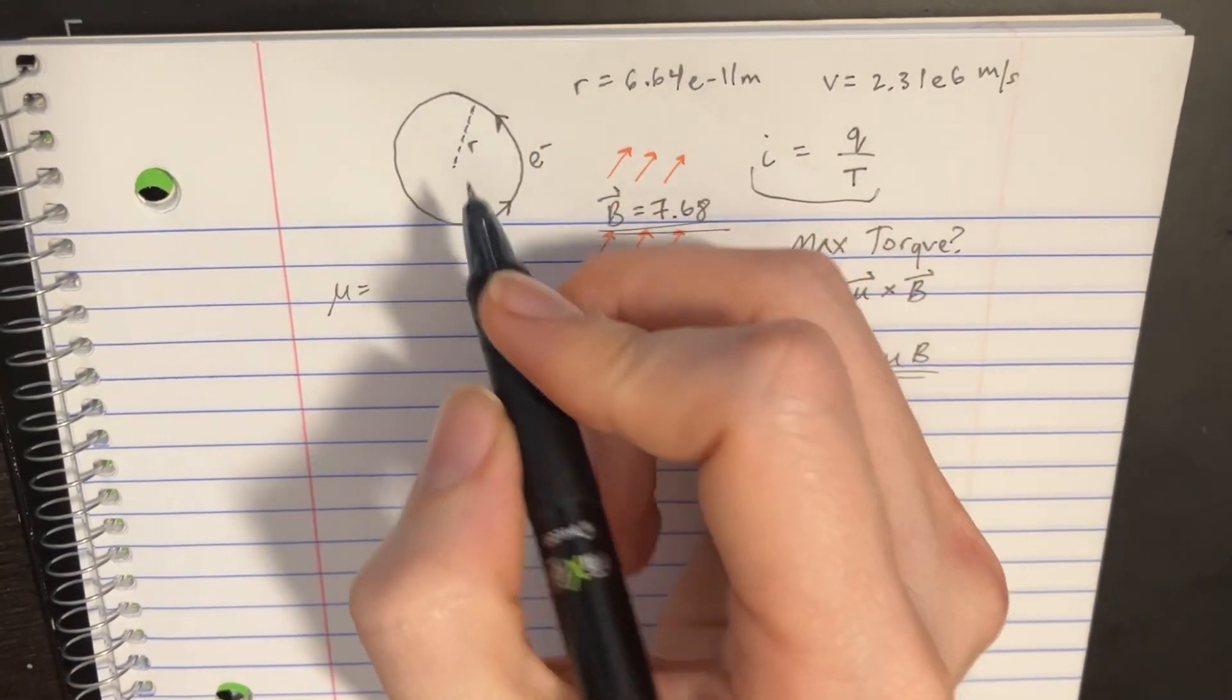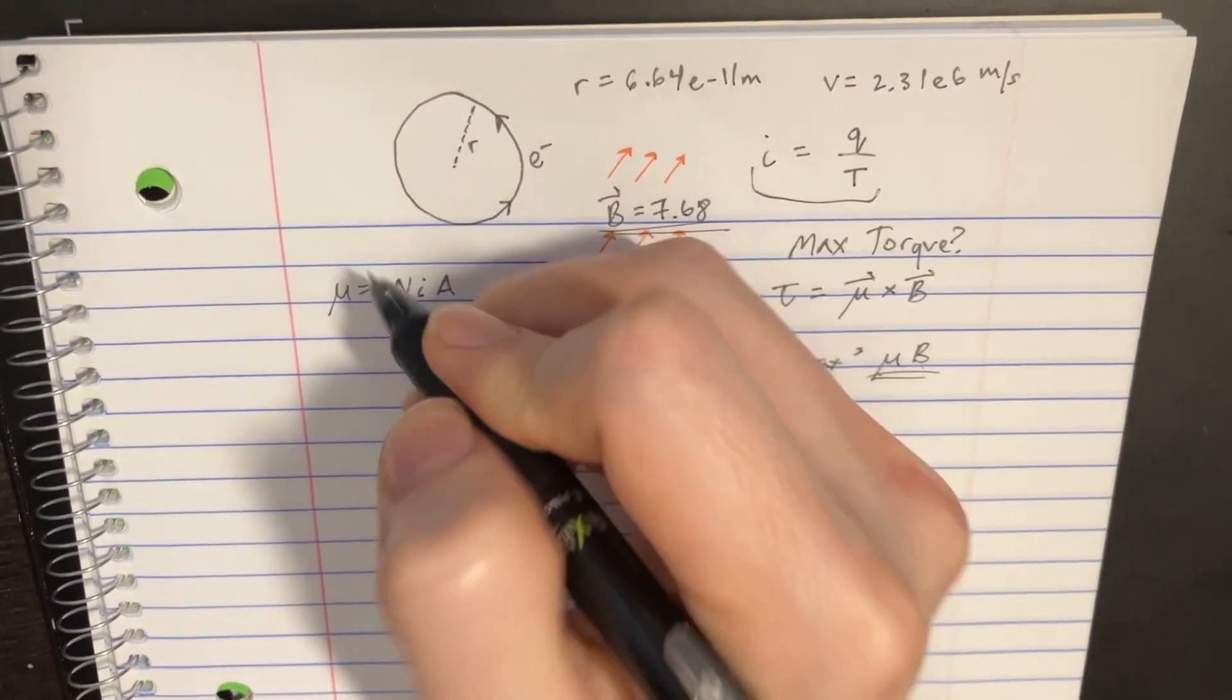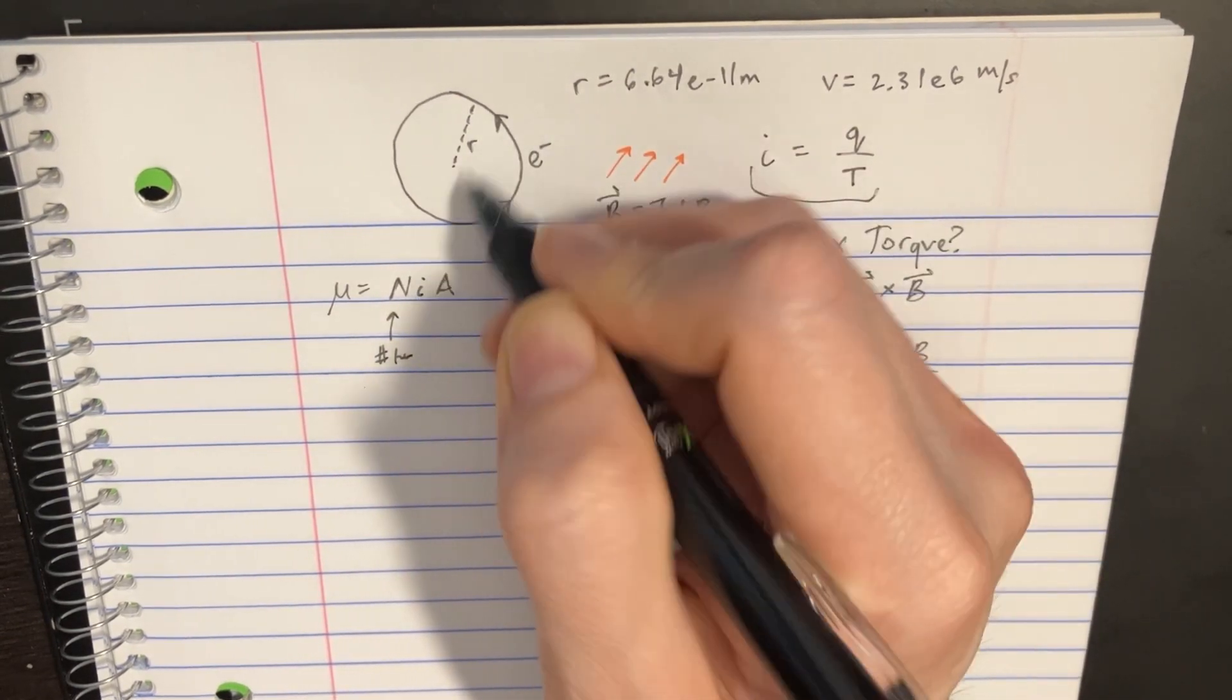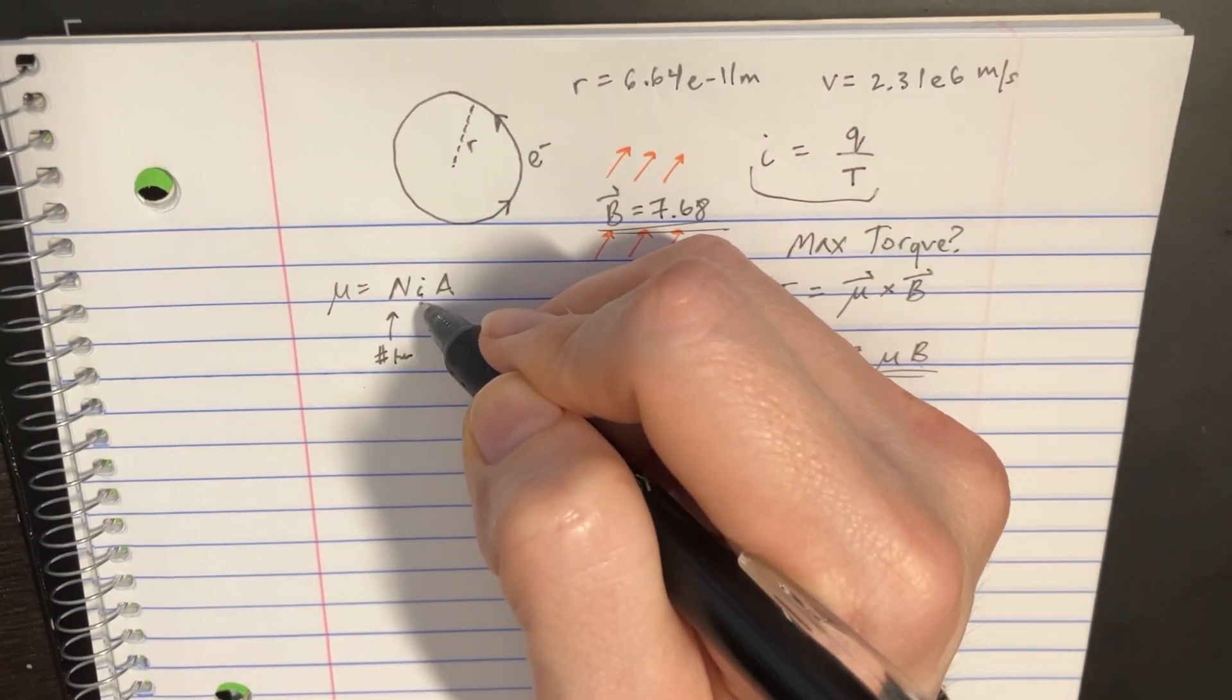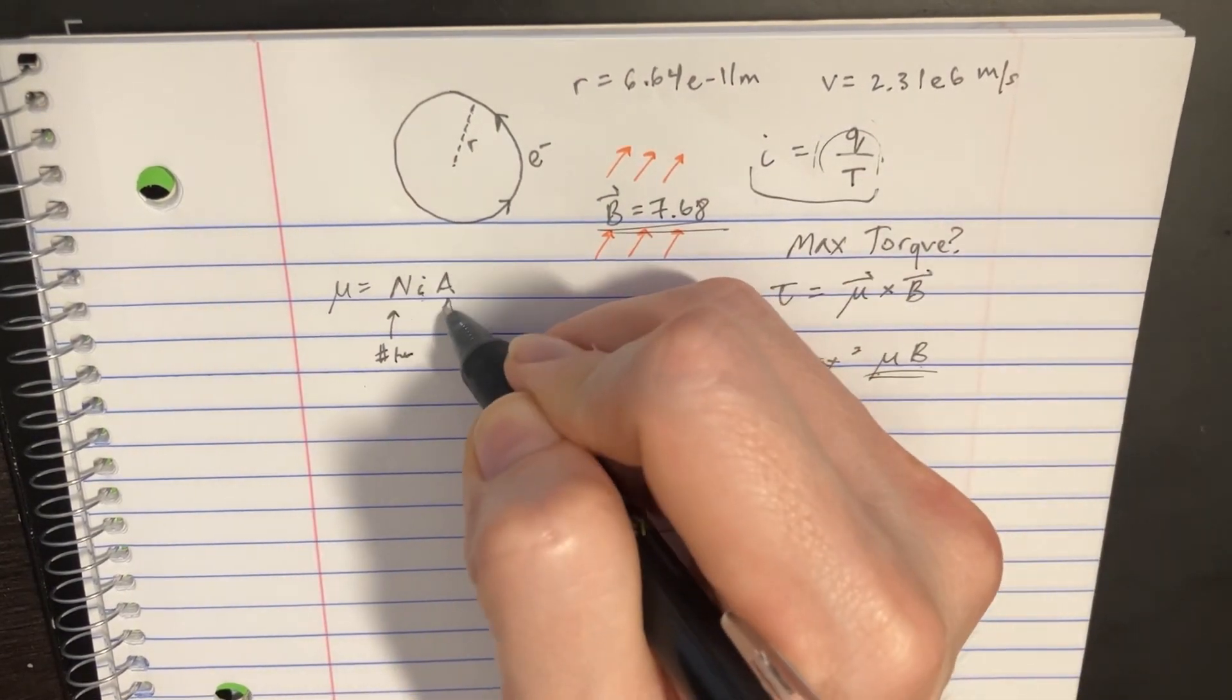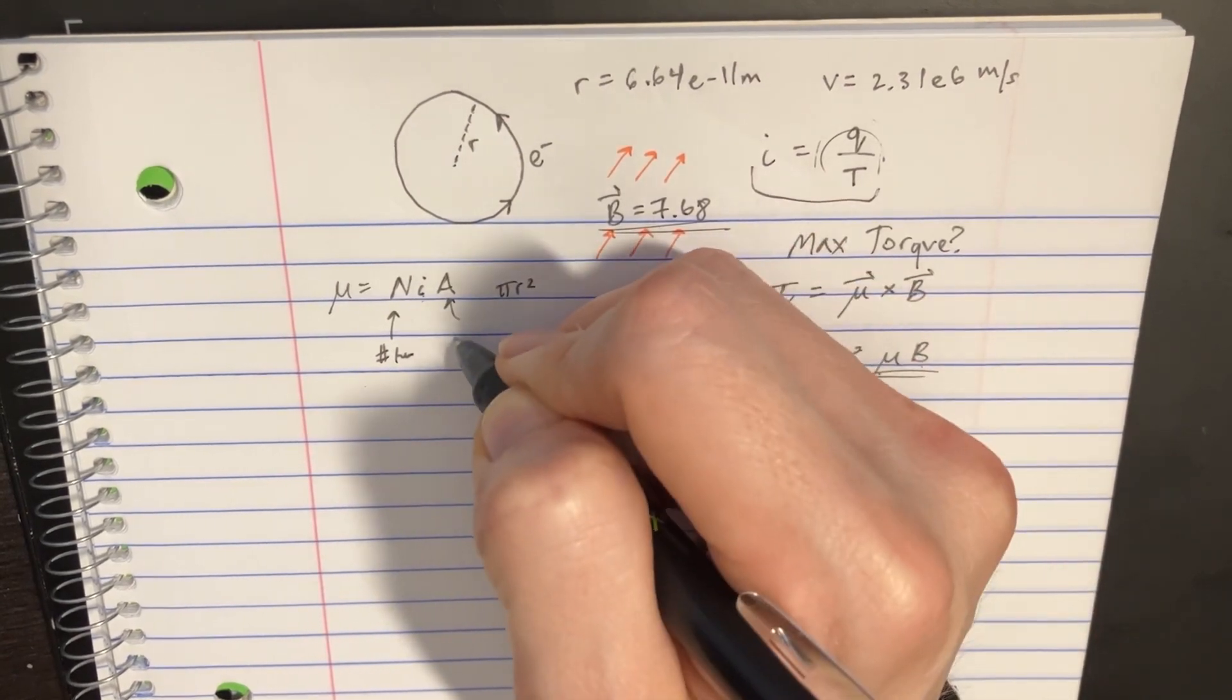Mu is n·I·A, where n is the number of turns, which in this case is just 1. I is the current, and A is the area, which is pi r squared, the area of the loop.